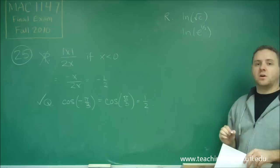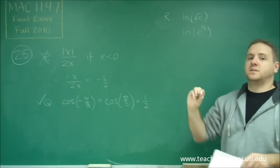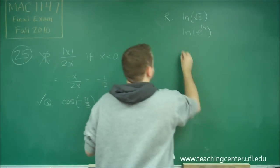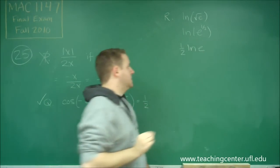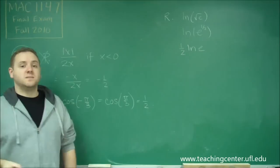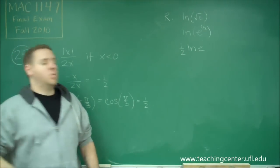And remember, using our logarithm rules, any powers can come to the front of the logarithm. So, this is the same thing as one-half ln e. And then, since ln is the natural log or log with base of e, ln of e is just one.